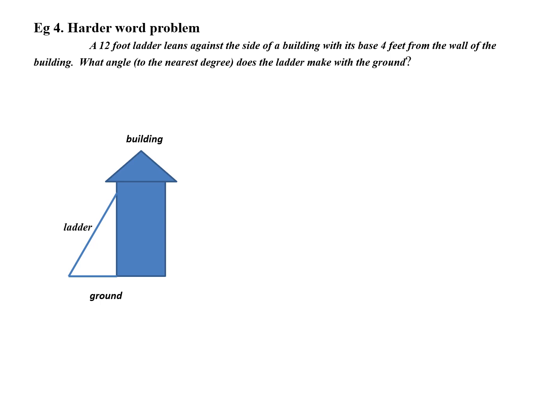My final example is a harder word problem. It won't be so hard in a couple of lessons, but for now it's going to be quite difficult. It says a 12-foot ladder leans against the side of a building with the base four feet from the wall of the building. What angle to the nearest degree does the ladder make with the ground? Step one: First, I always draw a picture. So here is my building, my ladder is leaning, so there is my ladder. And the ground is what the ladder and the building sit on.